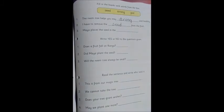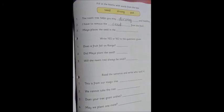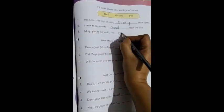Now the last one. Maya places the seed in the... So for the plant to grow, where should she place the seed? In the pot. So the next one is pot. We will write the word pot. P-O-T. Pot.